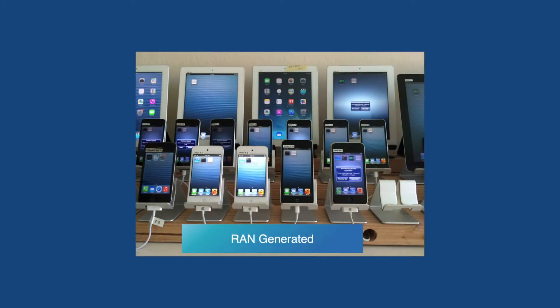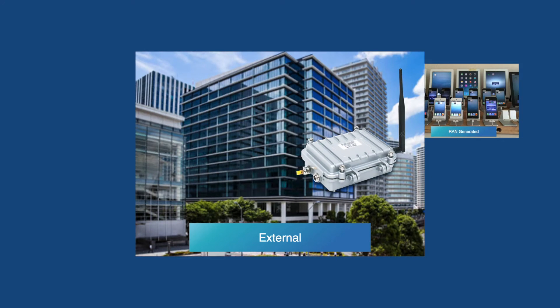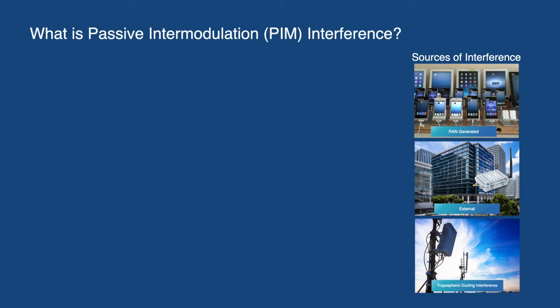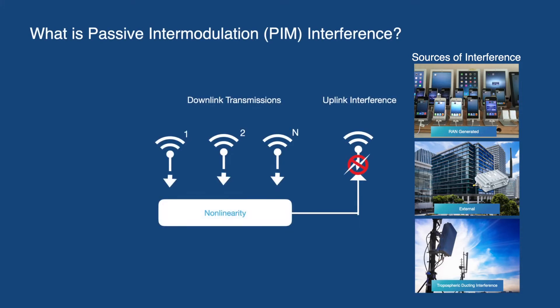There are multiple types of interference that impact mobile networks: interference from within the RAN itself, interference from external sources outside the mobile network that generate interference on the operator's licensed spectrum, and interference from RF signals carried over long distances during periods of weather-related tropospheric ducting. Passive intermodulation interference is another type of RF interference from a very different source. PIM interference is caused by electrical nonlinearities present at different positions along the RF signal's path. Downlink transmissions can combine together at these nonlinearities to produce a signal that interferes with uplink frequencies. Since the nonlinearities are passive, meaning they don't require external power, the process is known as passive intermodulation.